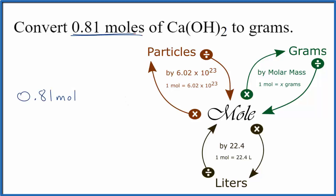So when we go from moles to grams, we multiply by the molar mass. And we find the molar mass here for calcium hydroxide by going to the periodic table and adding up the masses of all of the atoms. If you need help with that, there's a link in the description how to find the molar mass for Ca(OH)2.